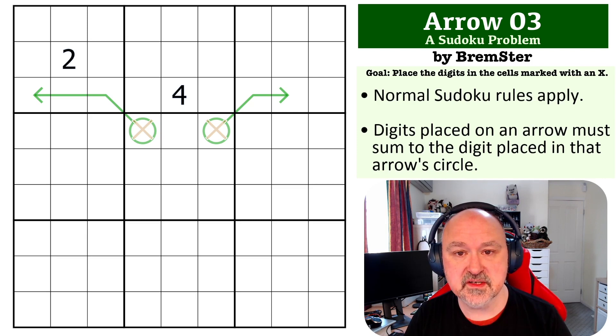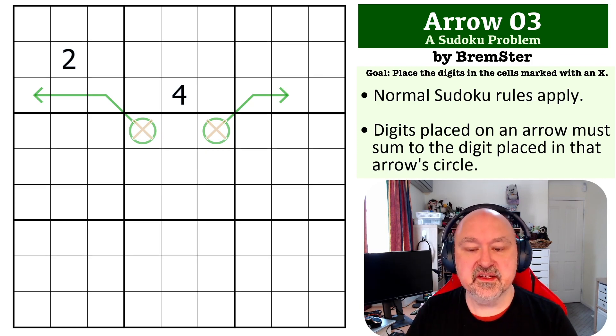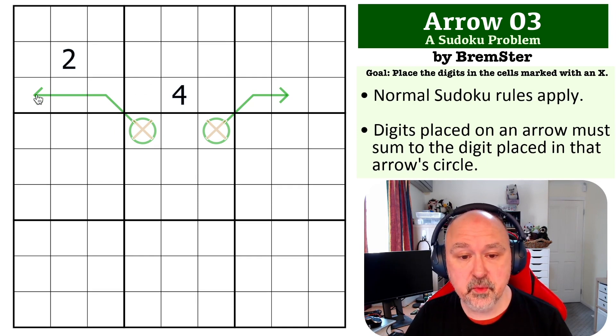Okay, so this is very similar to the first ever problem in the series. What we have is in row three, these digits all see each other, and the sum of those digits have to go into these circles. So what is the minimum we can put into these?